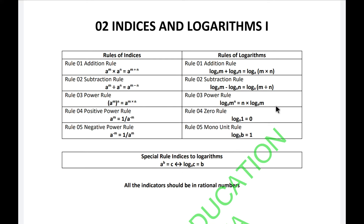Rule one, the addition rule for indices: if you have the same base with different powers, like a to the power m multiplied by a to the power n, you can write this as a to the power m plus n. Always make sure to have the same base. Rule two, the subtraction rule, is the opposite: a to the power m divided by a to the power n equals a to the power m minus n.